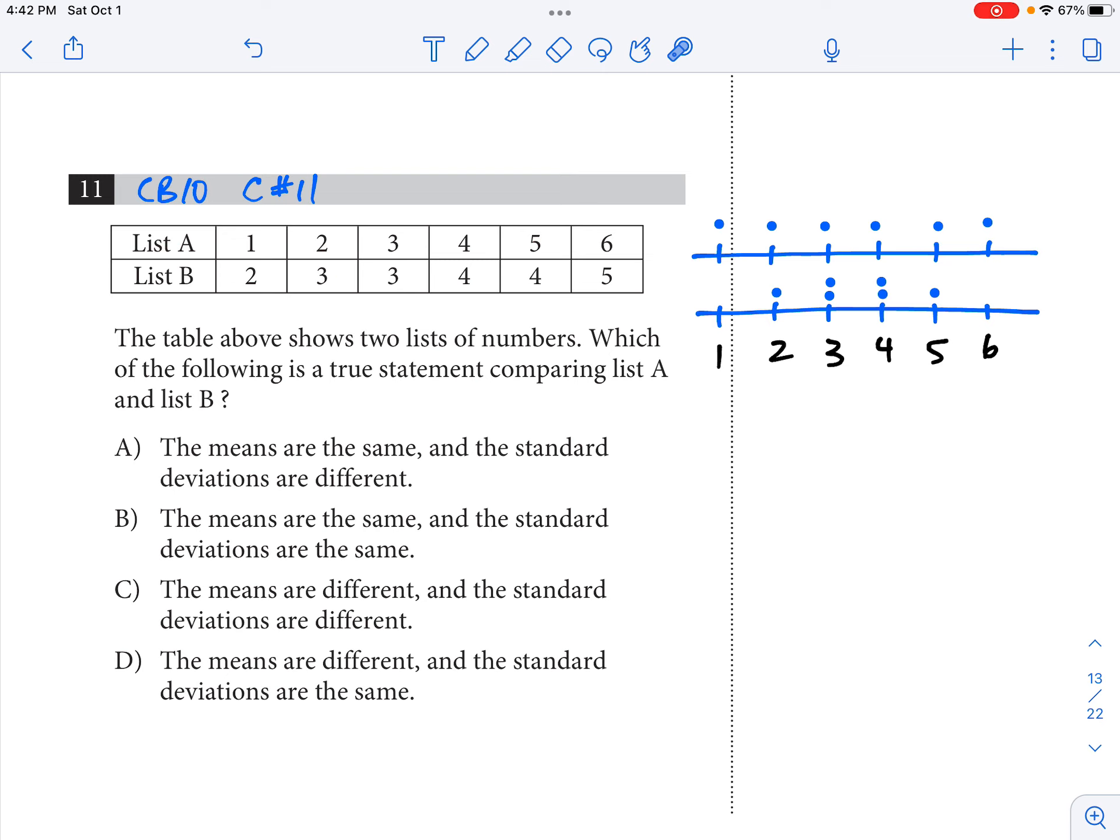You can look at these lists and be able to tell where the average is. The average is going to be right in the middle for both of them, which would be 3½. You can verify that by using your calculator. This is a calculator question, so you can add 1, 2, 3, 4, 5, and 6 all together and divide by 6. You get 3½.